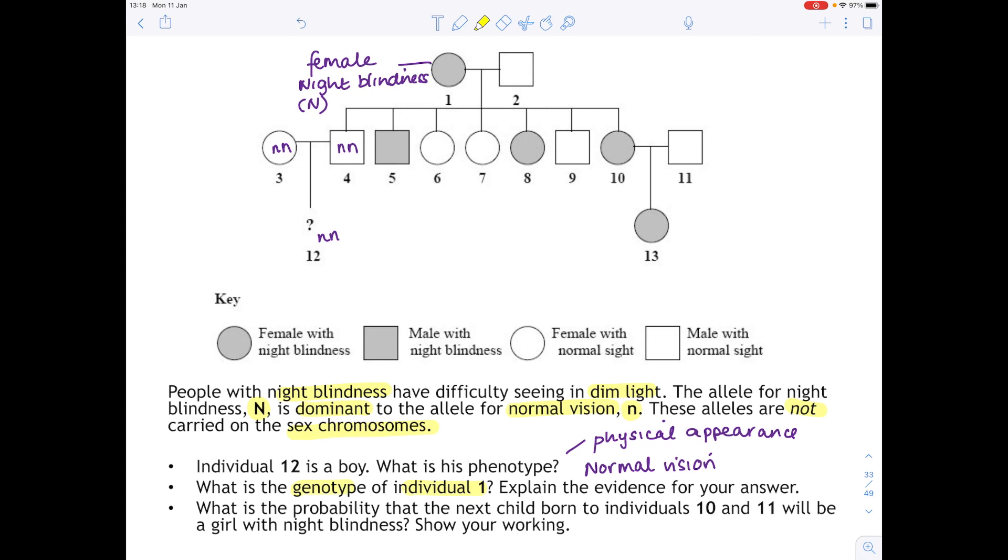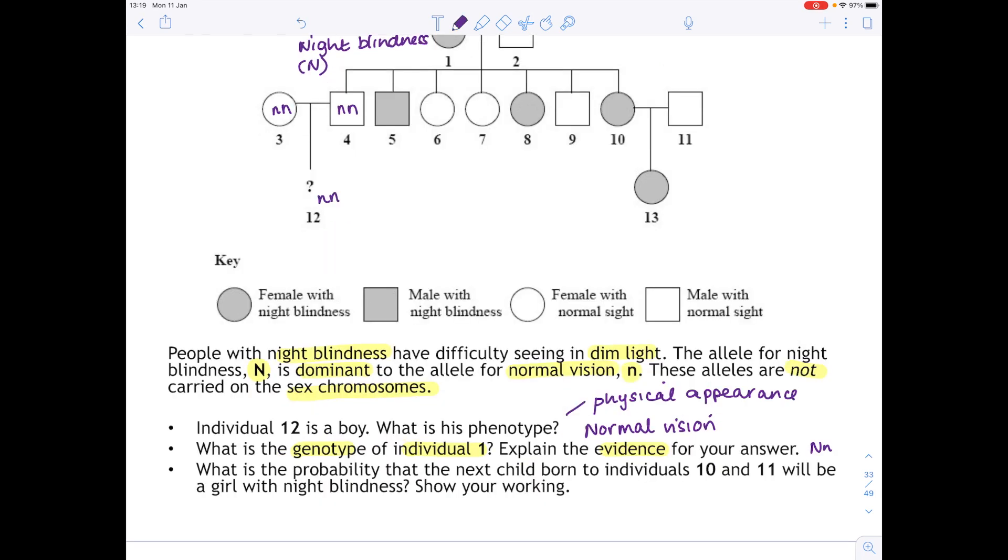What is the genotype of individual 1? Explain the evidence for your answer. So we're looking at this individual here. We're looking for genotypes, so we need a combination of alleles. I've already pointed out that they must have a capital N in order to have night blindness. The question is now does individual 1 have the homozygous dominant genotype or the heterozygous version of that genotype? The way to work that out is by looking at all the offspring. Obviously if they had this genotype, then every single one of the offspring would have night blindness. This isn't the case, which stands to reason therefore that they are heterozygous.